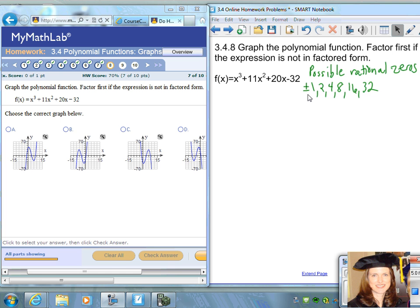These are all your possibilities: positive 1 could be 0, negative 1, plus or minus 2, 4, 8, 16, and 32.